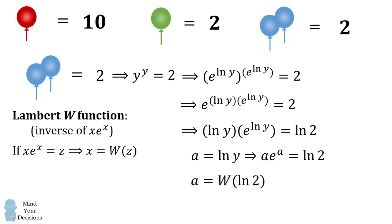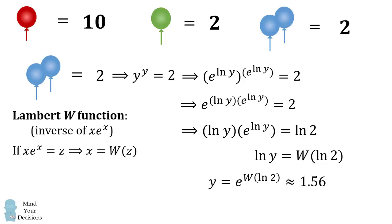Now we'll go back and substitute that A is equal to the natural log of Y, and then we'll take E to the power of both sides. So we can solve that Y is equal to E to the power of W of the natural log of 2, which is approximately 1.56. Note that I calculated this in Wolfram Alpha, so I calculated W of natural log of 2 as product log of the natural log of 2. So this means we have the value for a single blue balloon being equal to E to the power of W of the natural log of 2, which is approximately 1.56.